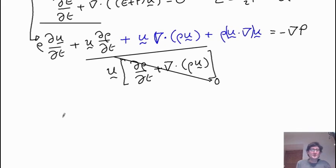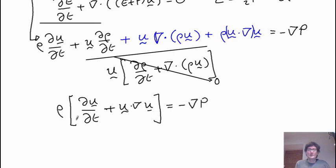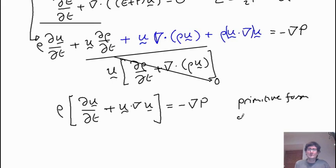What we end up with is rho times (du/dt + u dot grad u) equals minus grad p. This is the momentum equation written in its primitive form — the primitive form of the momentum equation, written in terms of the velocity u directly.